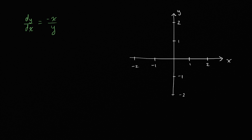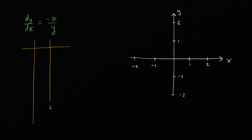So let me set up a little table here with a bunch of x and y values. I'm just sampling some points on the coordinate plane to be able to visualize. So the columns are x, y, and dy/dx.